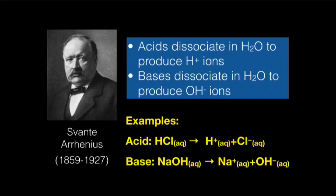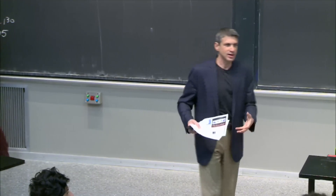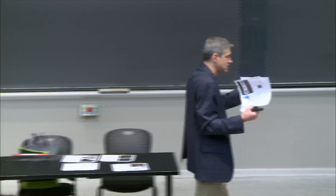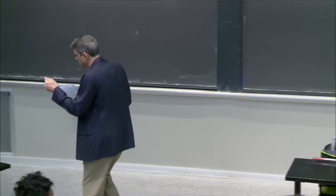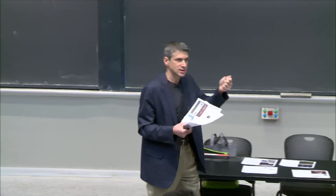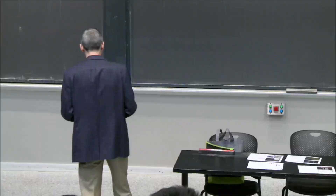This is the Arrhenius definition — Svante Arrhenius was the first. Remember, for thousands of years people would say 'this is bitter, put it in that category; this is sour — acid, base.' People categorized acids and bases for a long time, but nobody really started to understand them at the atomic scale until Svante came along and said it's all about the H⁺ and the OH⁻. Acids donate H⁺ ions — protons — into solution, into water. Bases donate OH⁻, adding those ions into the water, and that's what gives them their properties.